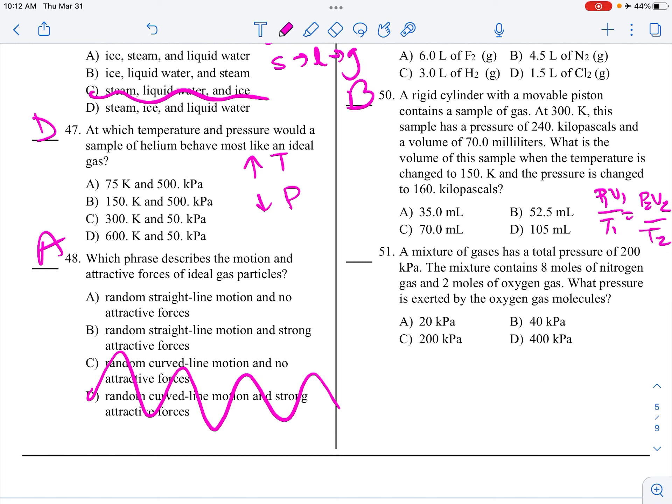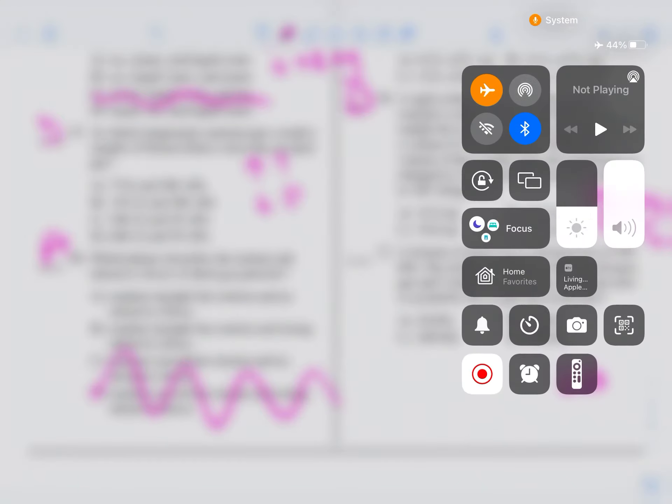I have time for one more and then I'm going to have to pause. This is, let's see, total pressure of 200 kilopascal, 8 moles of nitrogen, 2 moles of oxygen, gas. Yeah, we're going to pause right here. Thank you. Be right back.